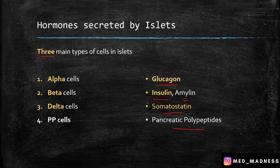One additional point: the beta cells are the major type of cells in the islets of Langerhans and they are present in the center of the islets, whereas other cells are present in the periphery.